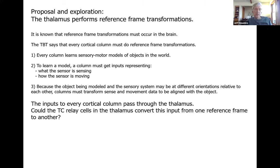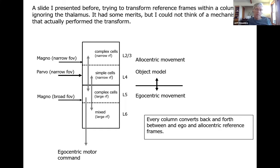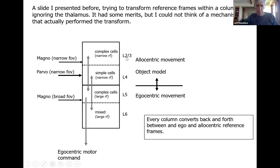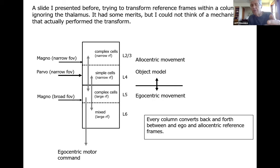The general theme here is that inputs to every cortical column pass through the thalamus. The question we want to ask is: could the thalamocortical relay cells in the thalamus be doing a reference frame conversion — converting an input from one reference frame to another? I'm going to start with a little bit of review. I presented a slide sometime in the last few months about how reference frame transformations could be occurring in different layers within the cortical column, talking about simple cells and complex cells, and how some layers might represent allocentric versus egocentric movement.